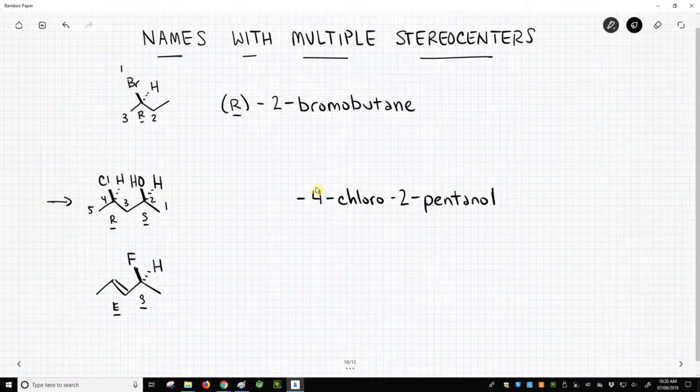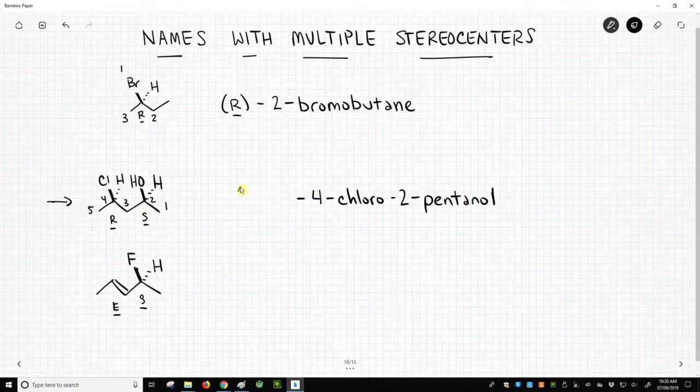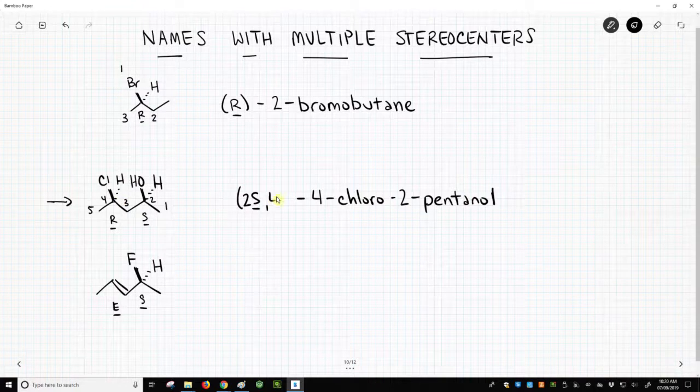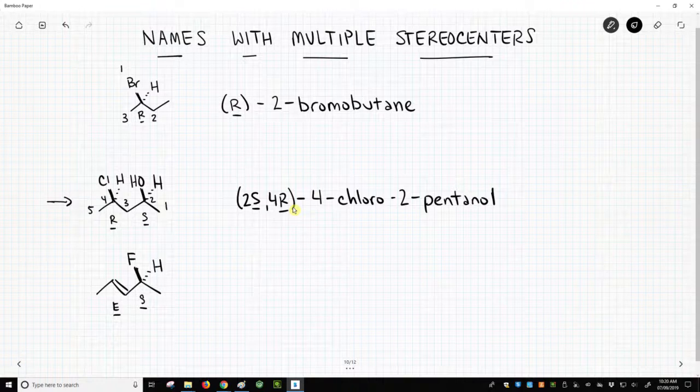So we just simply put these in numerical order. So at the 2-position, we have an S. So 2S. We underline that because it's italicized. And then the 4-position is the R-configuration. And that's it. So if we have multiple stereocenters, we have to give them a position number to know which configuration goes with which carbon.